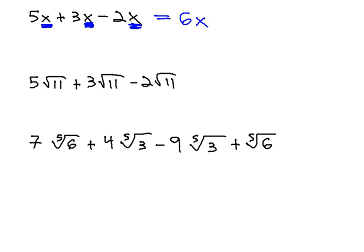We can think about radicals in much the same way. If we replace the x with the square root of 11 in this problem, we have 5 root 11 plus 3 root 11 minus 2 root 11, and we can do much the same thing to add and subtract these by adding and subtracting the like radicals.